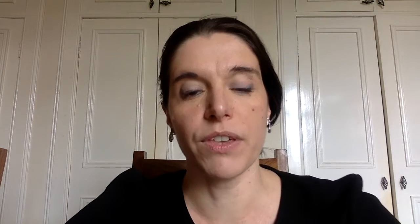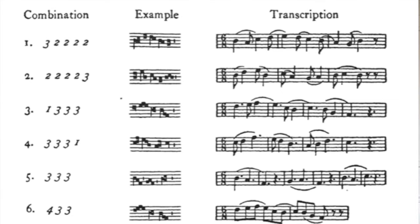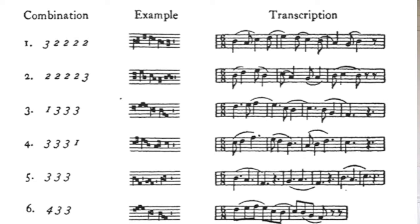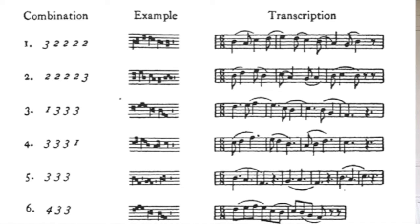Here's a slide again from Apel's book which gives you the key. For example, if you observe that notes are grouped with a group of three followed by groups of two, then you are in mode one. It's not that each note in a ligature has a fixed value — it all depends on context. Modal notation is all about the context.